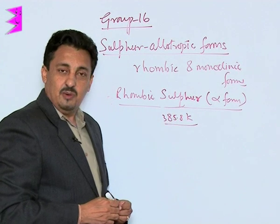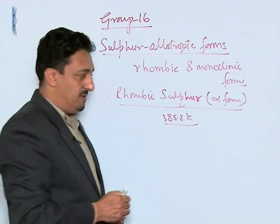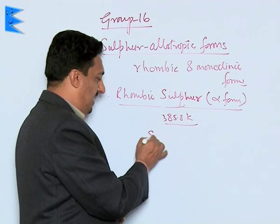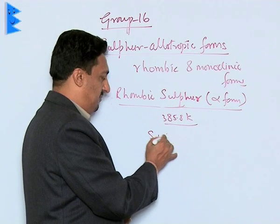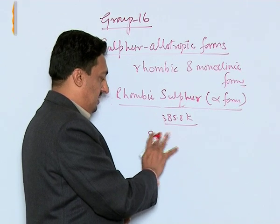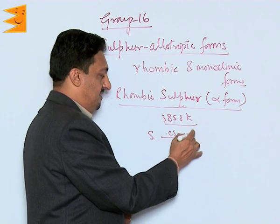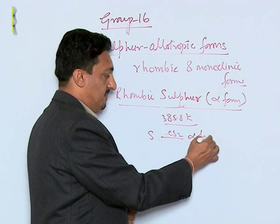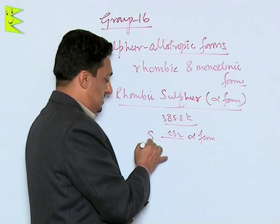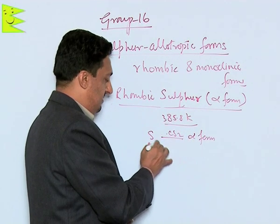It is prepared when Sulphur is heated in the presence of carbon disulfide (CS2), which causes it to change to the alpha form.